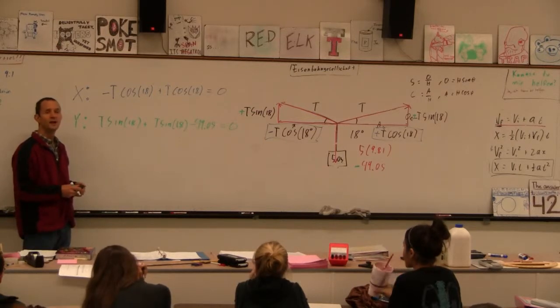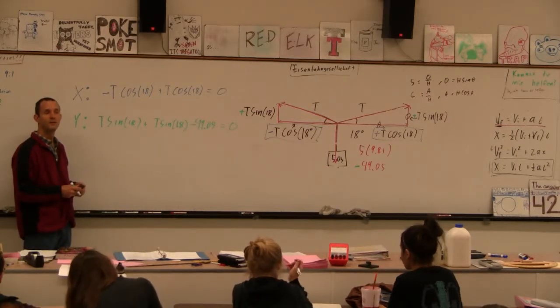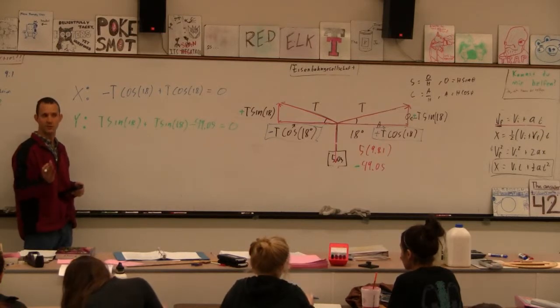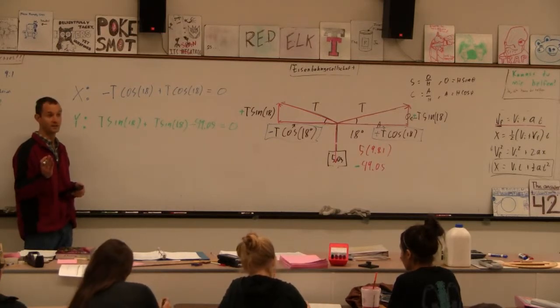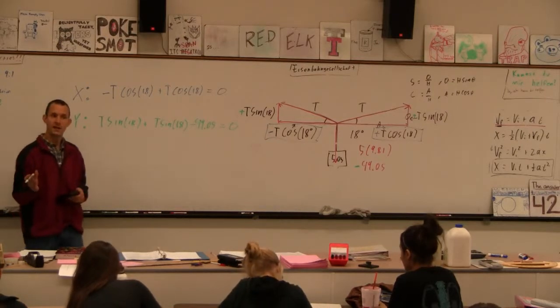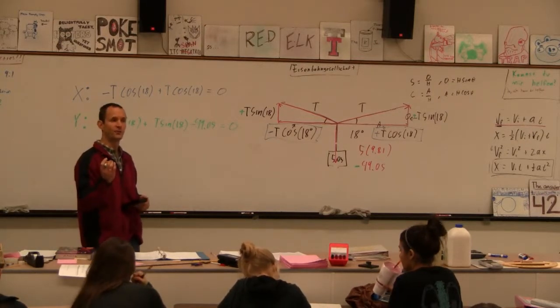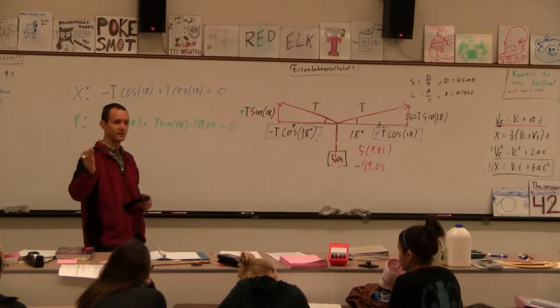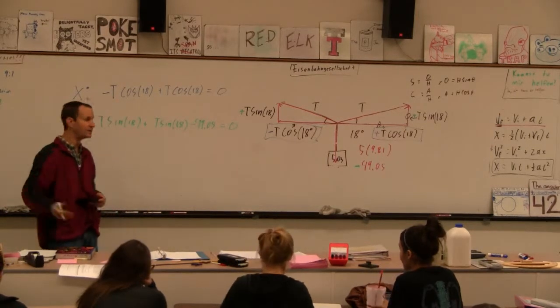In F equals MA equations where it's accelerating, the sum of the forces equals M times A. And that's what the skill set today is about. In these, the sum of the forces, it's simpler. The sum of the forces is zero in all of these. So we've moved on. This is like chapter nine stuff.